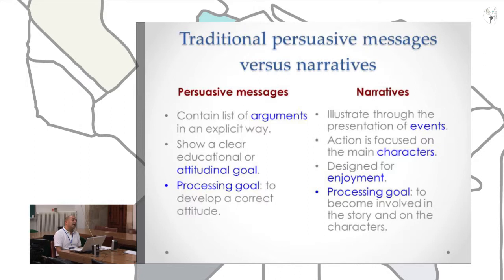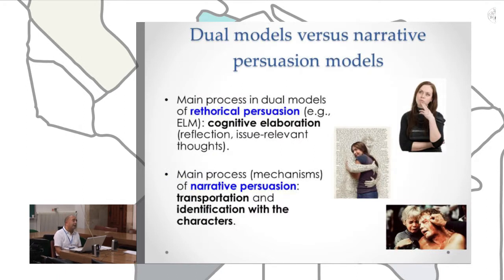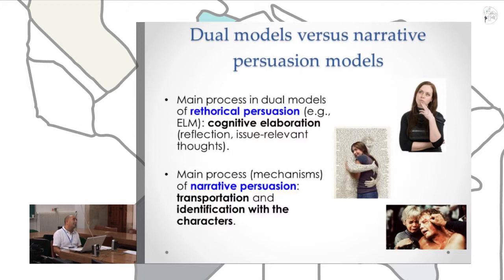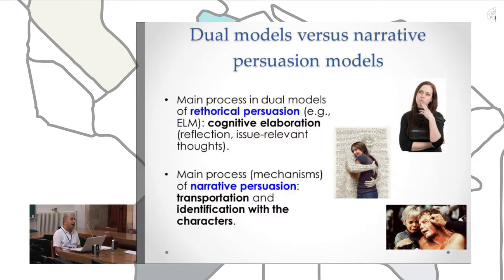In this sense, several theoretical models have been proposed to understand how persuasion works in the context of traditional persuasion and how persuasion works when examining the impact of narratives. The main process in dual models — for example, the ELM by Petty and Cacioppo — is the process called cognitive elaboration, which involves reflection and issue-relevant thought that the audience develops during the processing of a message. On the other hand, the main processes of narrative persuasion are transportation and identification with the characters.